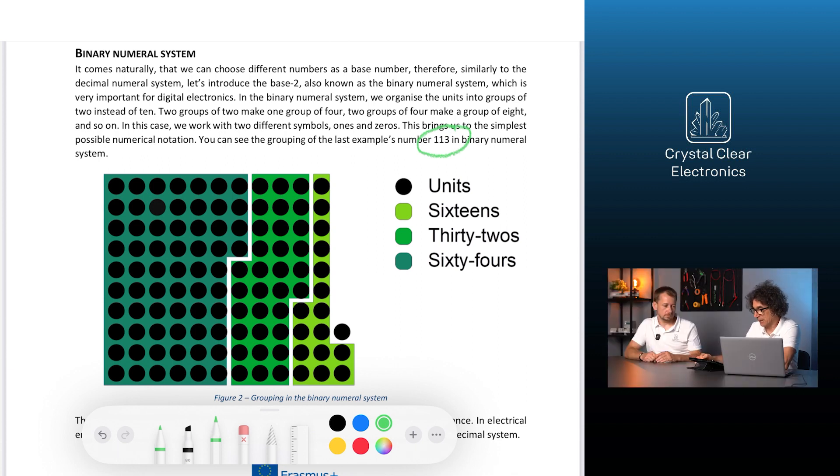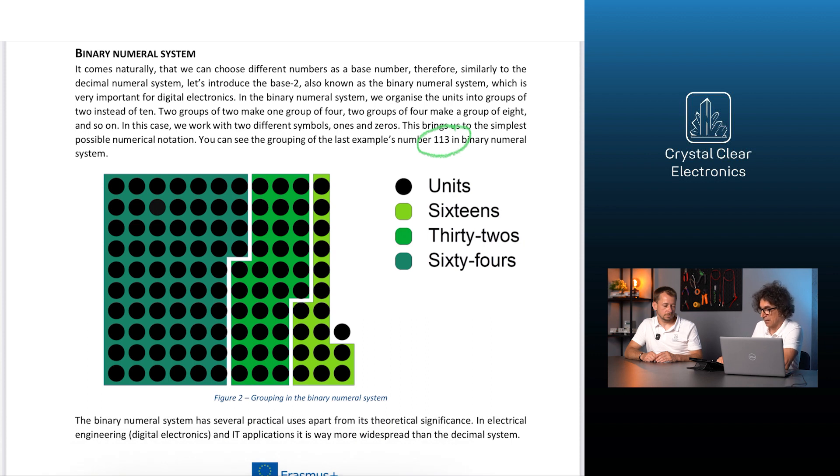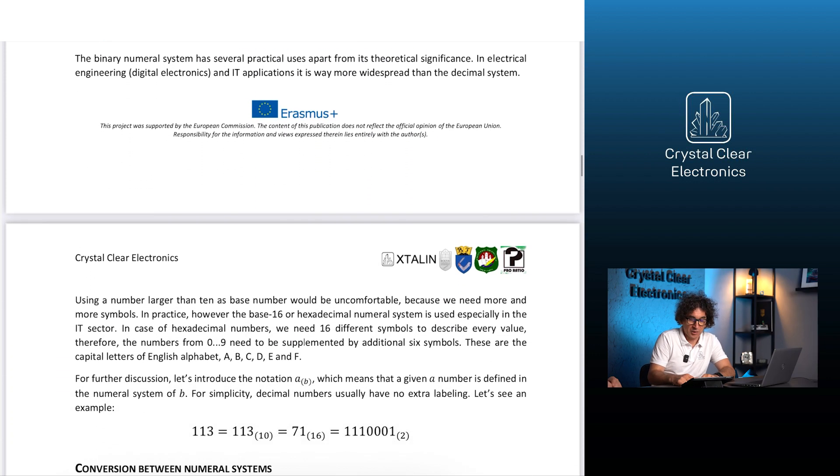The binary numeral system has several practical uses apart from its theoretical significance. In electrical engineering, digital electronics, and IT applications, it is way more widespread than the decimal system.